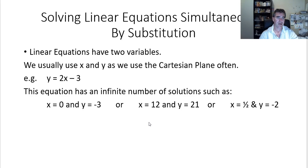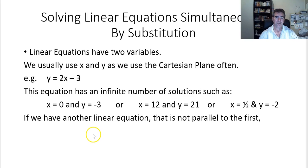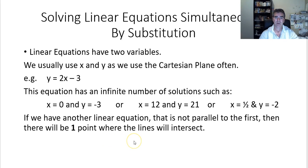We could choose many different solutions, an infinite number of solutions where that works. However, if we have another linear equation and it's not parallel to the first one, then there will be one point where the lines will intersect. We call this the point of intersection.